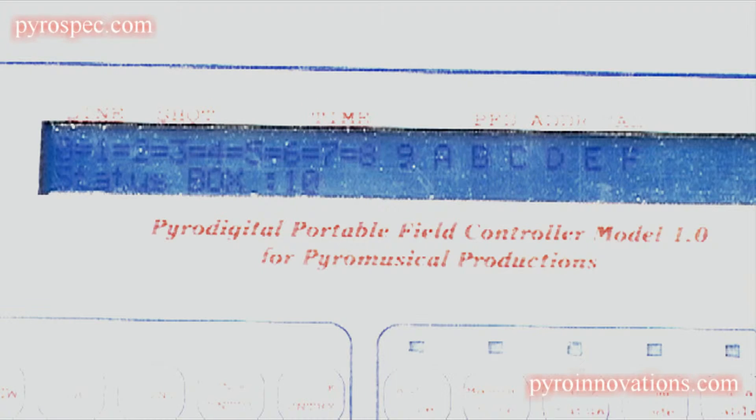Semi-auto mode is choice one, so we would hit choice one to go into semi-auto mode. On the bottom of the LCD screen you'll see a status box and then the address of the module. In our case, we have box one zero. On the top it's going to have zero through F. Those are the individual cues on that particular module.